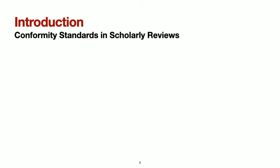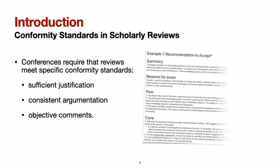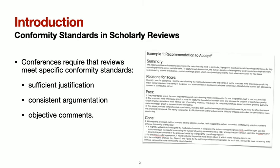Conferences provide some guidelines for reviewers to follow during the reviewing process. They often require that reviews meet specific conformity standards, such that they are well structured, provide sufficient and consistent justification, and that all comments are formulated objectively. For example, the International Conference on Learning Representation provides the following example for an acceptance recommendation, where the review contains a brief summary and justifies the attributed score with a list of pros and cons.